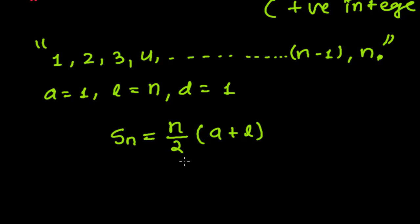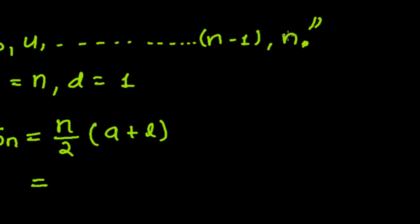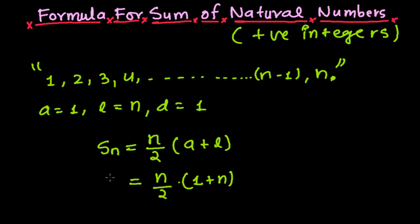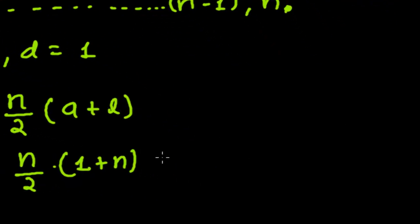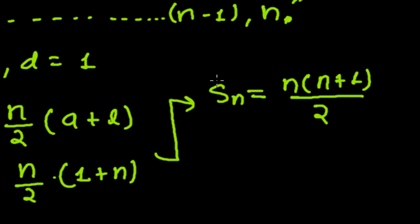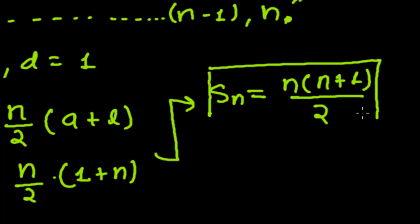Now let's apply this formula. The sequence starts from one, two, three, four, five, and so on up to the nth term, so there are n number of terms. Therefore n upon two, times the first term which is one, plus the last term which is n. This gives us: the sum of n terms equals n times (n plus one) divided by two.